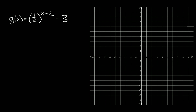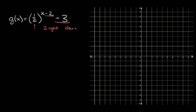Next we have g of x is equal to one half raised to the x minus two, minus three. This number is smaller than one, so we know we're going to have exponential decay. We also have a minus two in the exponent, so that means we're going to shift it positive two spaces to the right. And we have a minus three at the very end, so that means down three spaces. This number tells us where our asymptote is, so this time it's going to be right here at negative three.